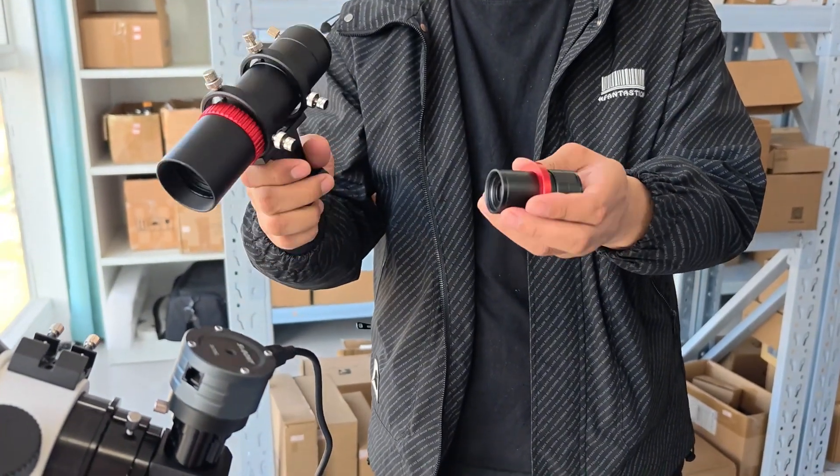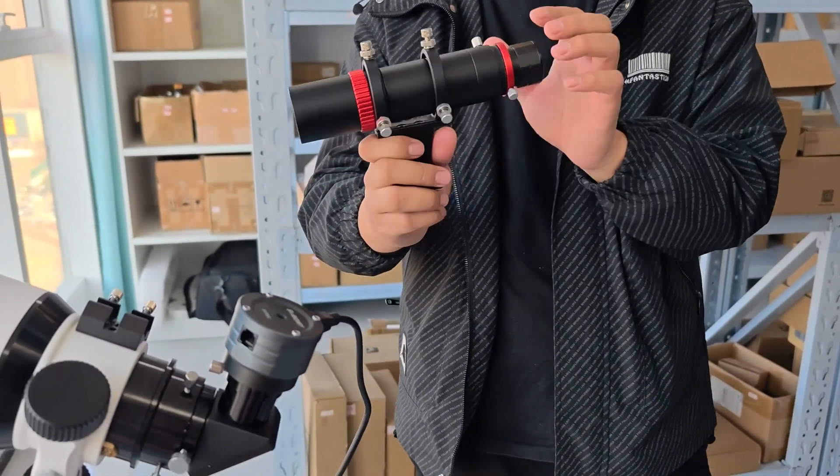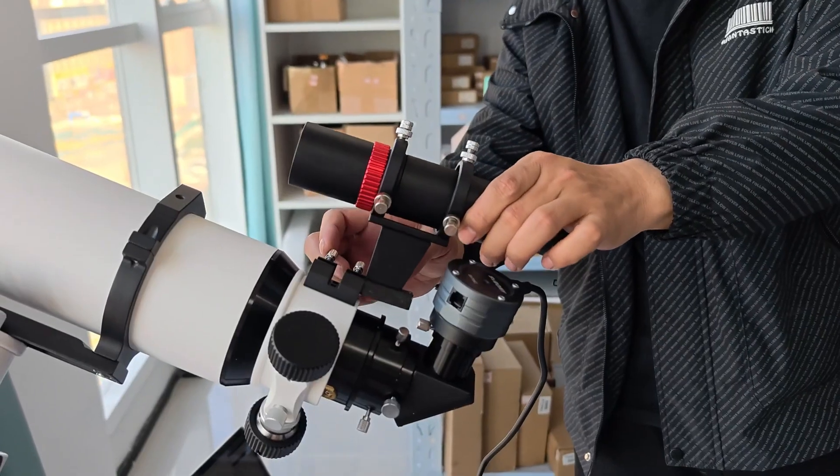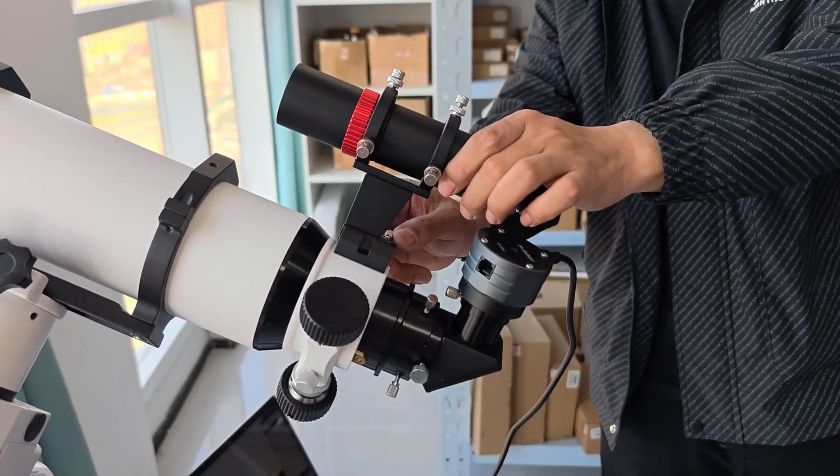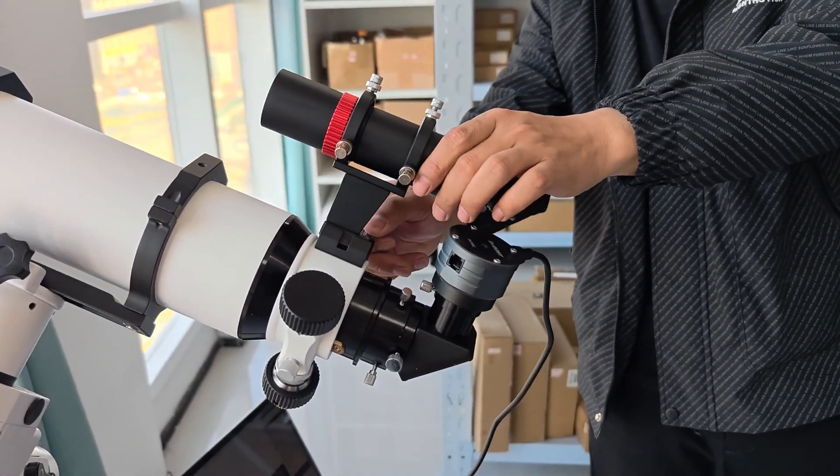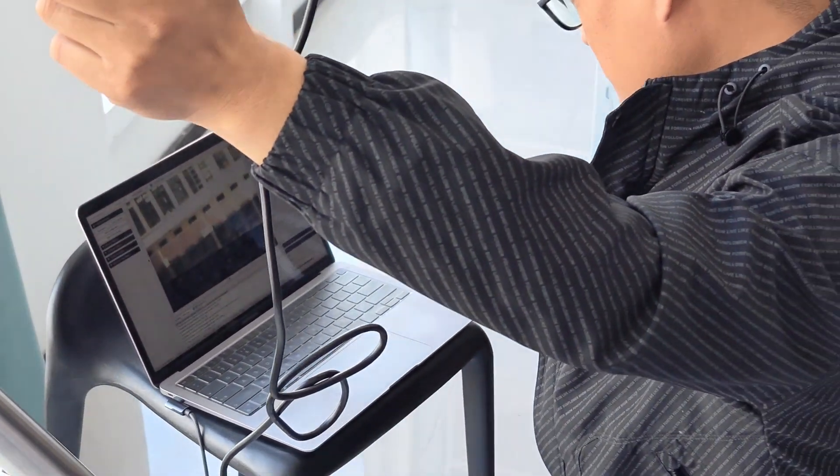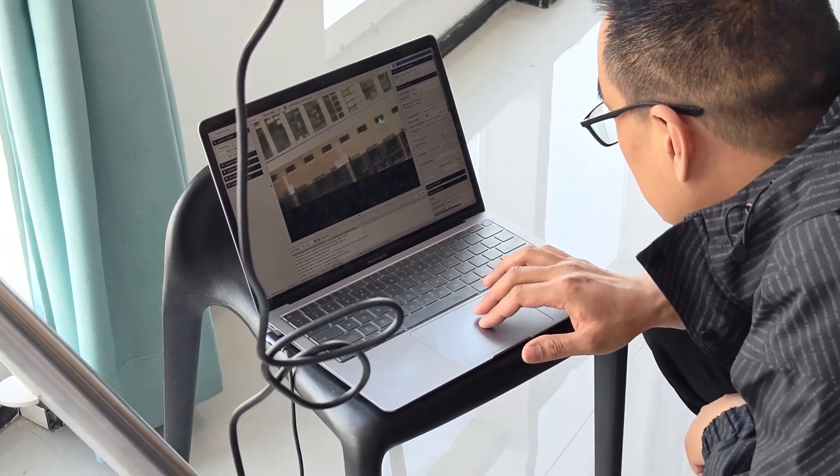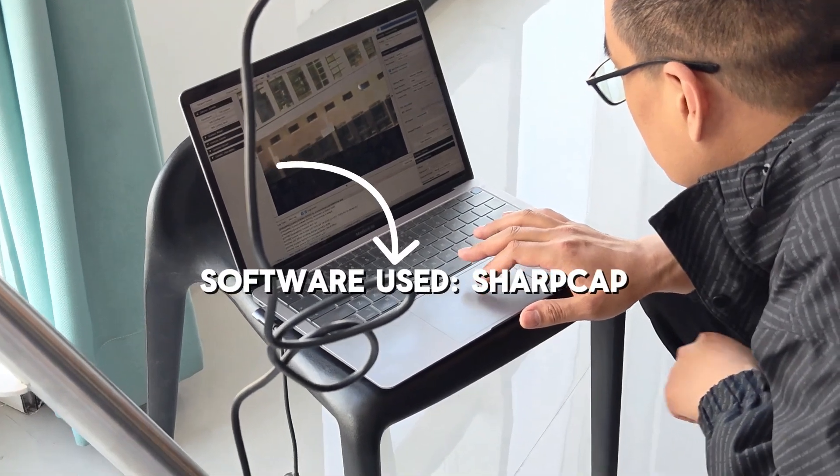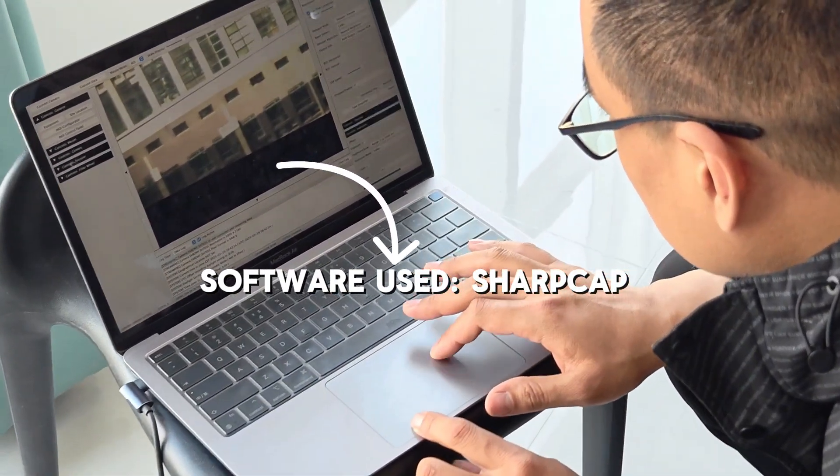In addition, during the actual use of the astro camera, the control system and the star tracking system are necessary. We need to ensure that we can always keep tracking the celestial target without being affected by the Earth's rotation.